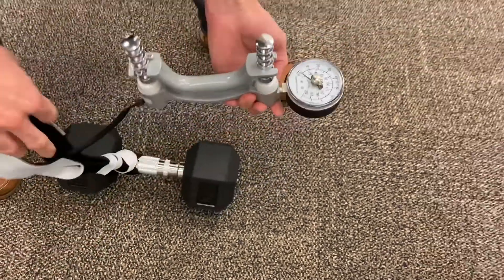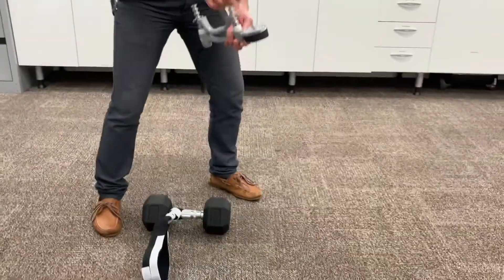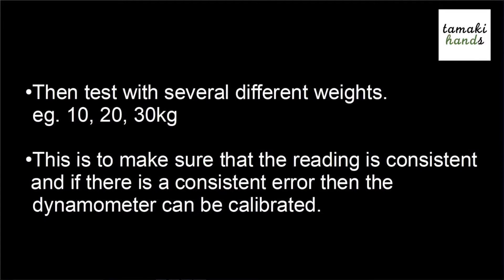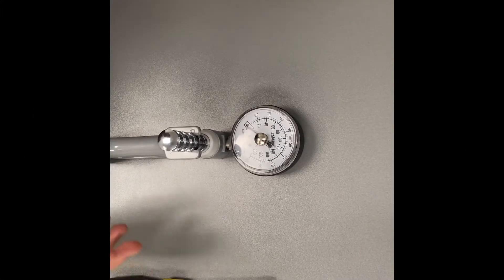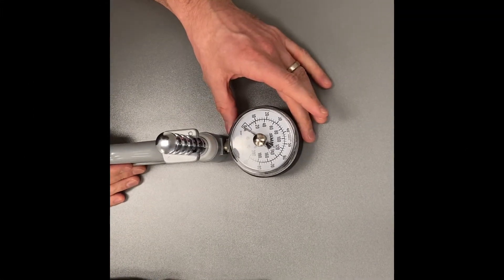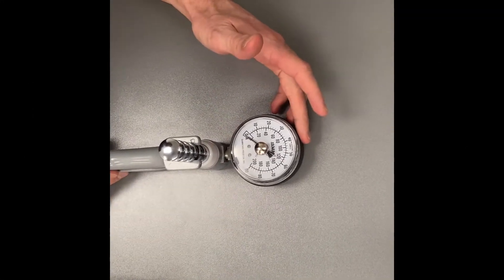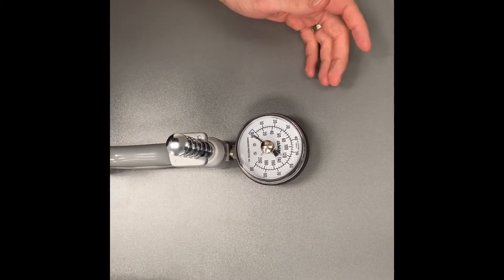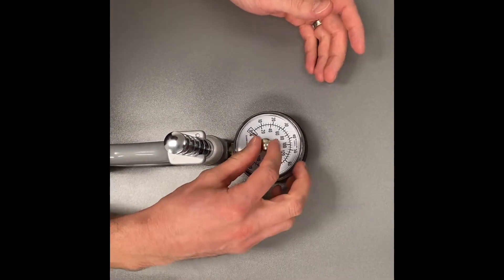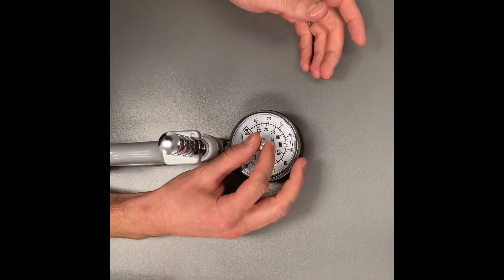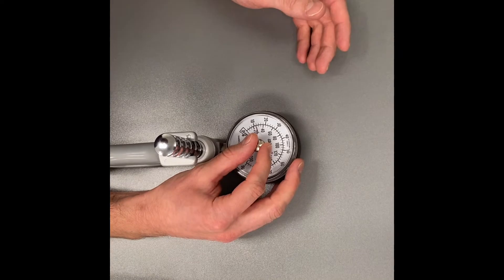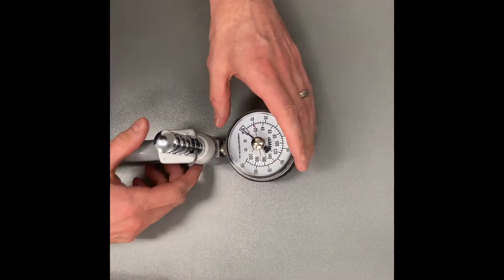We're just going to now show how you might go on to recalibrate the dynamometer after let's say you've found it out to be out by a couple of kgs. So let's say it was maybe a couple of kgs too high, we measure it with a 10 kg weight. We're going to try and just bring that down a little bit.